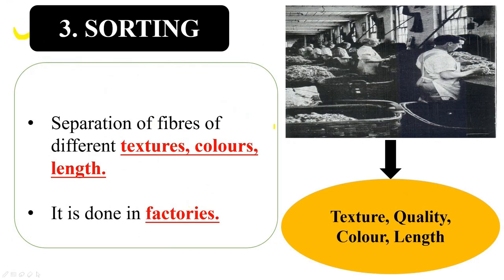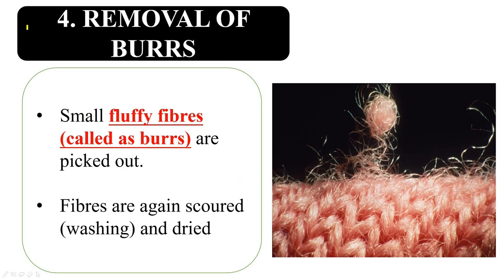Sorting is separating fibers according to their texture, color, and length — just like sorting a basket of mixed fruits by type. This is done in factories. After sorting, the next step is the removal of burrs. These small fluffy fibers called burrs are picked out, and the fibers are again washed and dried.